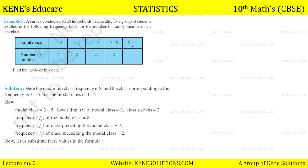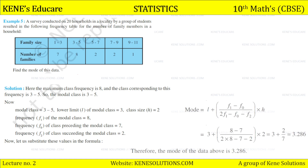The maximum class frequency is 8 and the class corresponding to this frequency is 3 to 5, so the modal class is 3 to 5. The lower limit of the modal class L = 3, class size h = 2, modal class frequency f1 = 8, frequency of the preceding class f0 = 7, and frequency of the succeeding class f2 = 2. Now let us substitute these values in the formula.